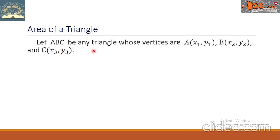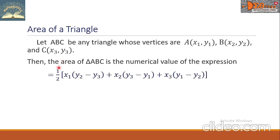Let ABC be any triangle whose vertices are point A (x₁, y₁), point B (x₂, y₂), and point C (x₃, y₃). Then the area of triangle ABC is the numerical value of the expression: one-half times the quantity x₁ times (y₂ minus y₃), plus x₂ times (y₃ minus y₁), plus x₃ times (y₁ minus y₂).